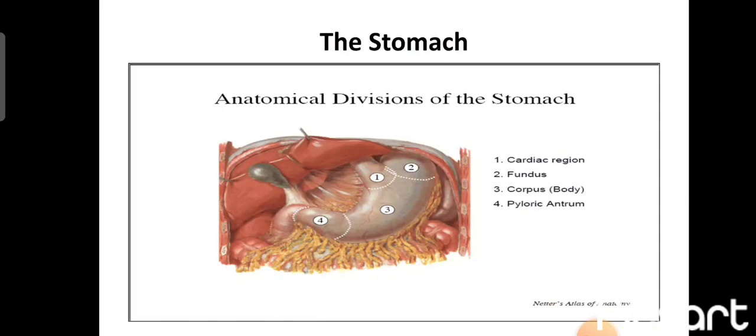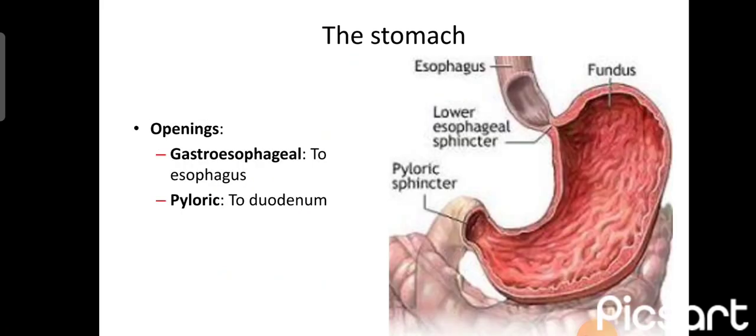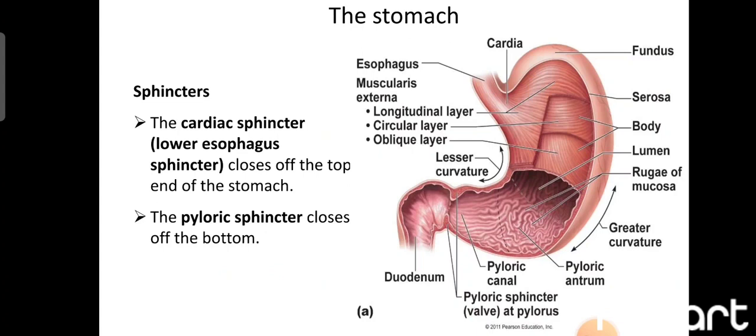The surfaces of the stomach: there are two surfaces — the anterior superior surface and the posterior inferior surface. The openings of the stomach: first is the gastroesophageal opening leading to the esophagus, and the pyloric opening leading to the duodenum. There are also two sphincters — the cardiac sphincter at the lower level of the esophagus, and the pyloric sphincter.